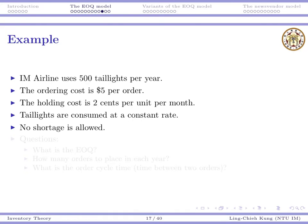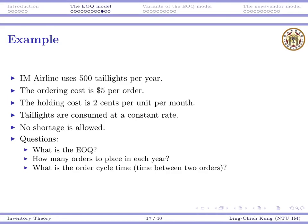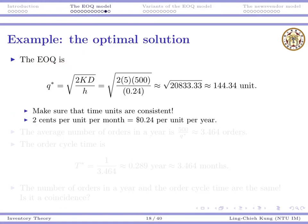Let's solve our example: 500 taillights per year, five dollars per order, two cents per unit per month holding cost, consumed at a constant rate, no shortage. What is our EOQ, how many orders will we place each year, and what is the order cycle time? First, the EOQ: we plug numbers into the formula.